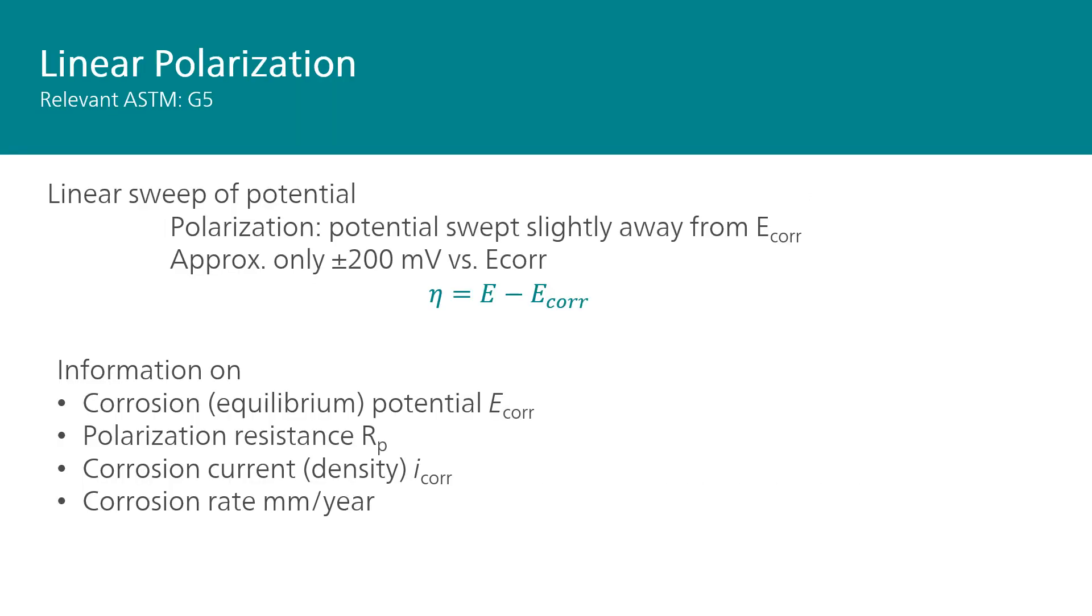What is linear polarization? Linear polarization is where the potential swept slightly away from the corrosion potential, the E-corr. Depending on what you want to do in the sample and the conditions, it is roughly plus or minus 200 millivolts versus the corrosion potential. When we run this kind of measurement, you will get the potential at which the current is zero. You also get the polarization resistance, Rp, which is basically another way of looking at the corrosion. It's like how difficult it is for the corrosion to happen. And at the end, you will get information about the corrosion current, the i-corr, which can be transferred into the corrosion rate.